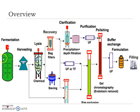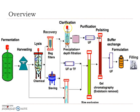Let us go with an overview of the fermentation process and downstream processing. Once fermentation is done, we harvest the product. If the product is intracellular, we go for cell lysis to break down the cell, take out the cell content, and recover the product. On the other end, there is a sieving process to separate solids and liquids.